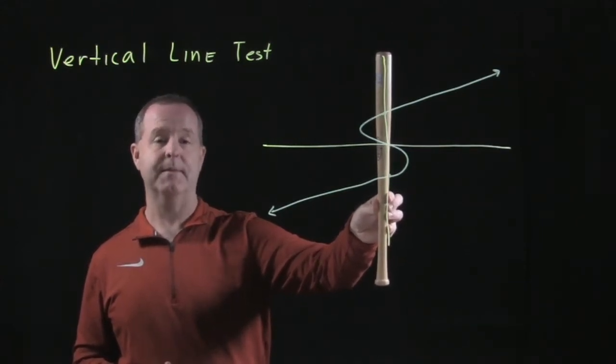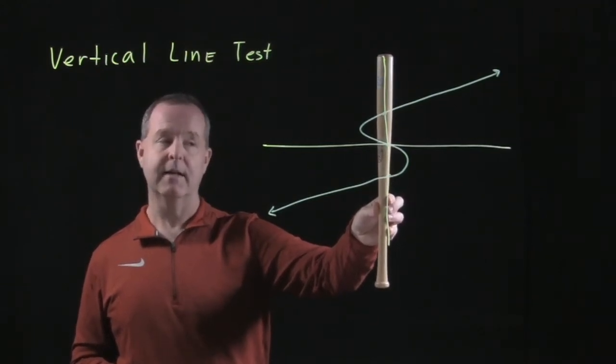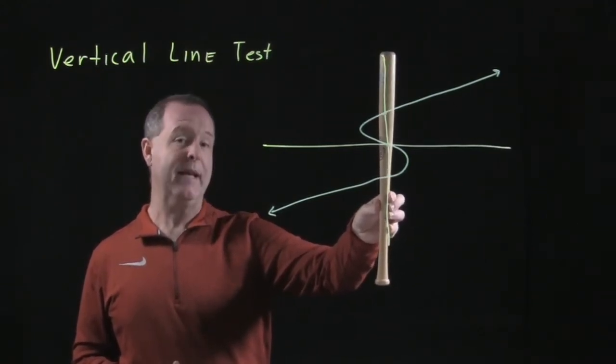Notice that the graph intercepts my vertical line more than once. So because of that, this graph fails being a function.